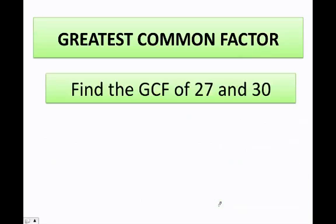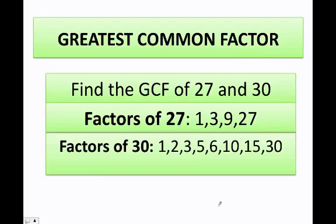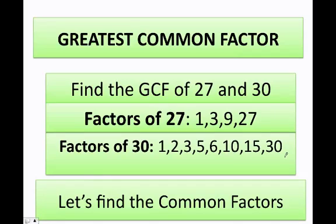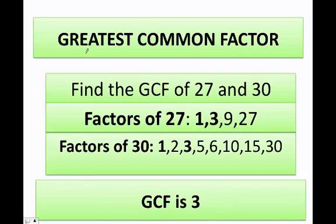Let's do another one. Let's figure out the greatest common factor of 27 and 30. The factors of 27 are 1, 3, 9, and 27. The factors of 30 are going to be 1, 2, 3, 5, 6, 10, 15, and 30. The only common factors are going to be 1 and 3, so the greatest common factor is 3.